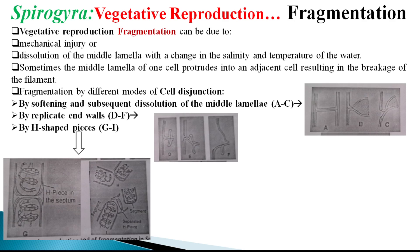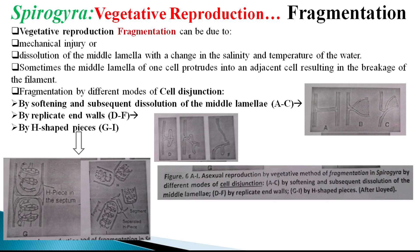The wall inverts owing to increased turgor pressure on the cells, and the H-shaped pieces slip off from the filament. Consequently, two cells get separated from each other. This is nothing but fragmentation — creating segments. In this way, fragmentation is carried out.